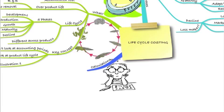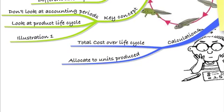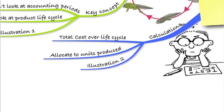These phases can be brought forward into calculations. We'll need to calculate our total cost over the life cycle, then allocate those costs to the units we expect to produce — and that gives us an accurate cost for the product. Once we've got that cost per unit, we can set the price per unit to cover those costs. Let's look at illustration two in your workbook.